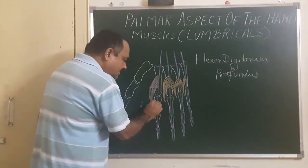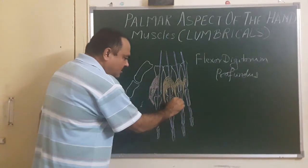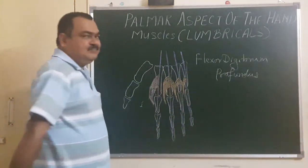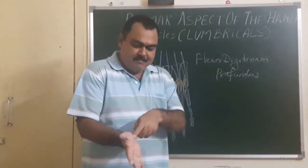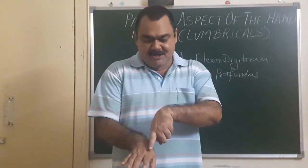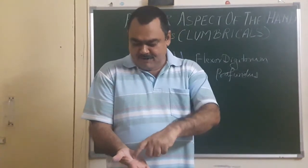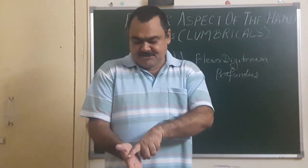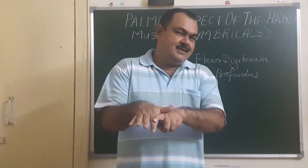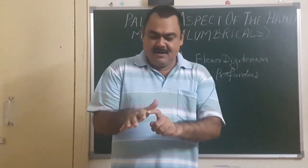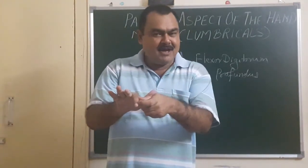These muscles cross the metacarpophalangeal joint and are inserted on the dorsal digital expansion. The tendons are present on the palmar aspect while the dorsal digital expansion is on the dorsal aspect. The lumbrical takes origin here, crosses the metacarpophalangeal joint, and inserts on the dorsal digital expansion — thus it flexes the metacarpophalangeal joint and extends the interphalangeal joint.